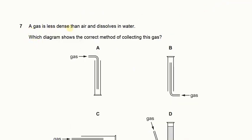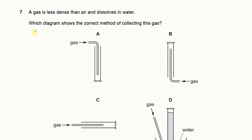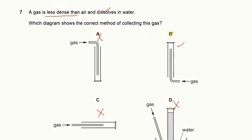A gas is less dense than air and dissolves in water. Which diagram shows the correct method for collecting this gas? Since the gas is less dense we cannot deliver it downward, so that is wrong. We can deliver it upward — that is fine. Since the gas dissolves in water we cannot use water displacement to collect it. So the answer is B.